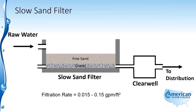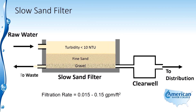Here's a simulation of how this works. Raw water comes in, and typically your turbidity is going to be less than 10 NTU if you're using a slow sand filter.